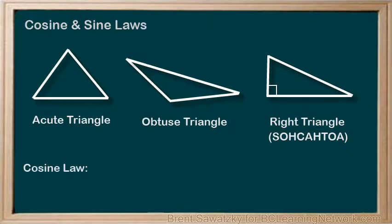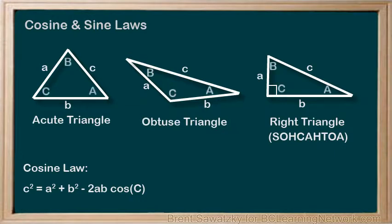Cosine law is typically written as c² = a² + b² - 2ab cos(C). Note that the lowercase letters a, b, and c represent the lengths of the triangle's sides, while the uppercase C in this formula represents the angle across from the corresponding side c.